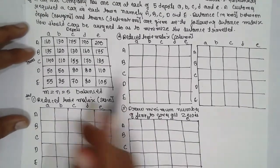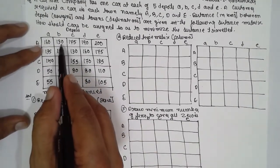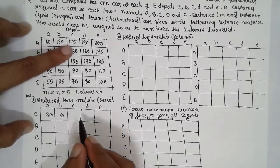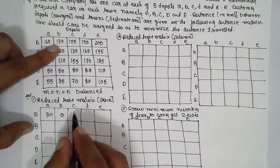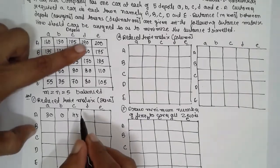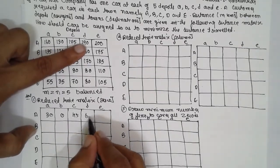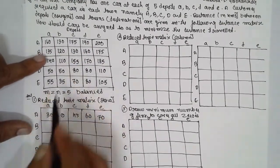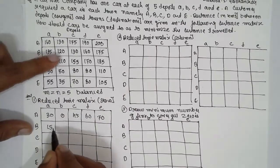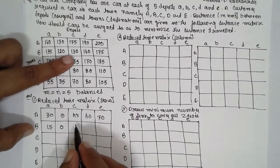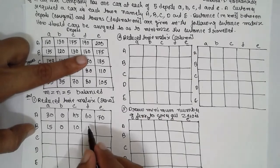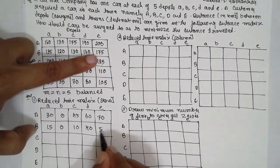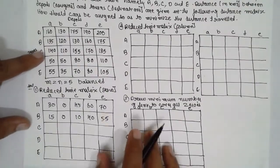Now reduce the matrix row-wise. For row 1, the minimum is 130. Deduct it: 160 minus 130 is 30; 130 minus 130 is 0; 175 minus 130 is 45; 190 minus 130 is 60; 200 minus 130 is 70. For row 2, the smallest is 120: giving 15, 0, 10, 40, and 55.